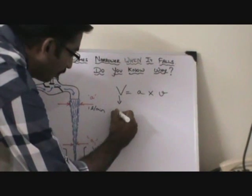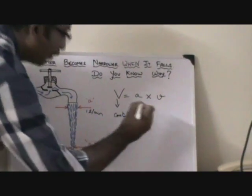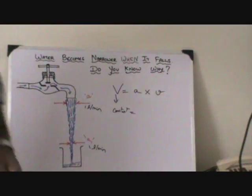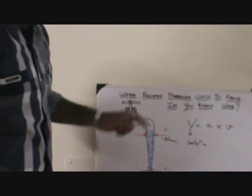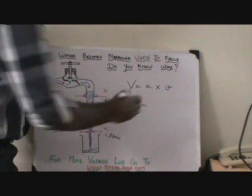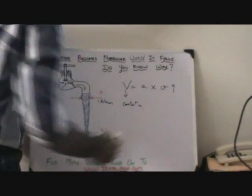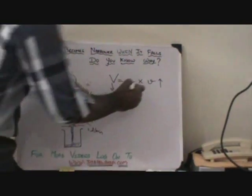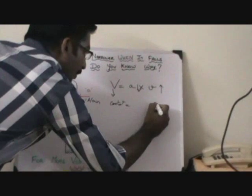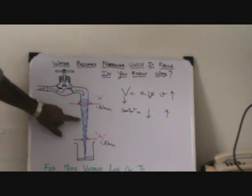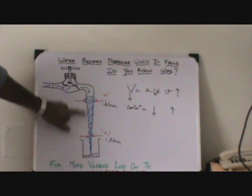Assuming the flow rate to be constant, let's see how velocity differs. When I drop this object it falls down — this is due to gravity. In the same way, water has a tendency to keep on increasing its velocity. So to keep the flow rate constant, the area must decrease. When velocity increases, cross-sectional area must decrease — that is the reason the area keeps on decreasing from top to bottom.